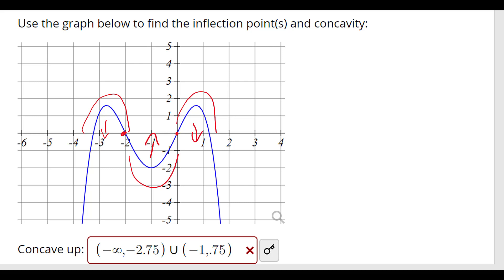So our concavity is negative. Concave up is from here to here, so concave up is going to be negative 2 to 0.